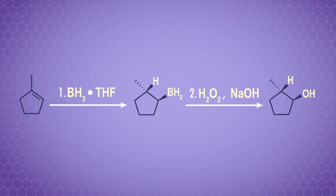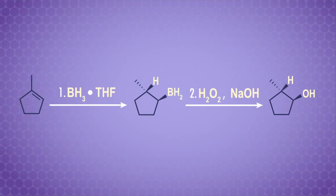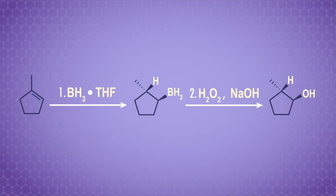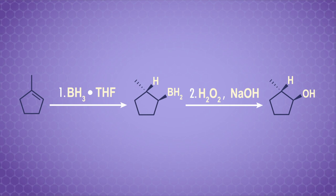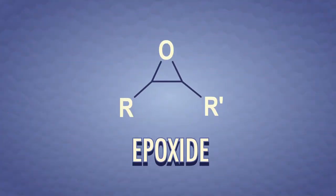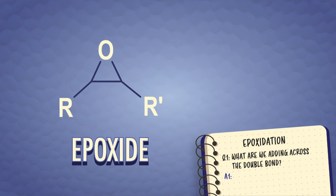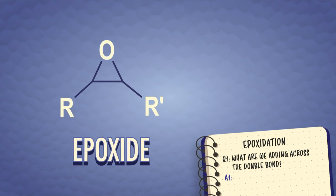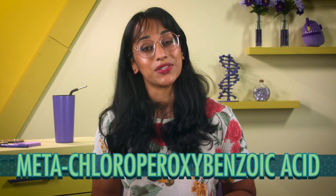We saw an example of an oxidizing agent at the end of episode 16 with hydroboration-oxidation, when hydrogen peroxide replaced the boron atom we added to the alkene. We can also use peroxides to perform a reaction called epoxidation. An epoxide is a three-membered ring with an oxygen, and we can make these from alkenes. Epoxidation adds one oxygen across both atoms of the double bond. Usually, we do epoxidation by reacting an alkene with MCPBA — meta-chloroperoxybenzoic acid.